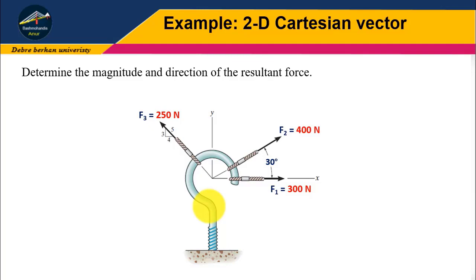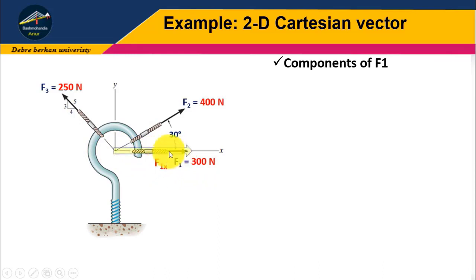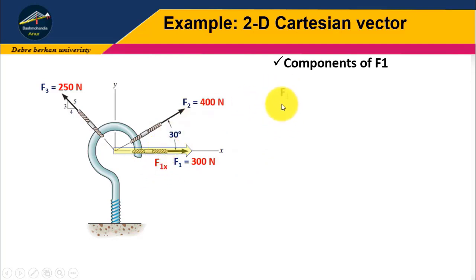Let us start by calculating the X and Y components of F1, or force 1. From the question, F1 is a perfectly horizontal force. Therefore, we have only a force in the X direction, which is F1X. This means force 1 in the X direction equals 300 Newton.